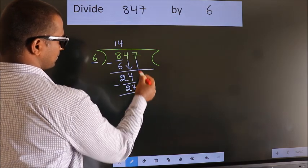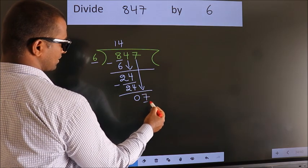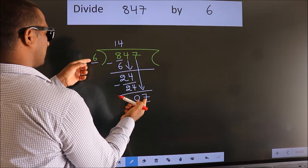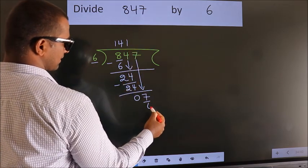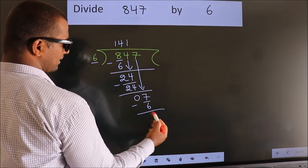After this, bring down the beside number. So, 7 down. So, 7. A number close to 7 in 6 table is 6 once 6. Now, we subtract. We get 1.